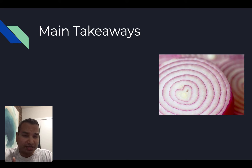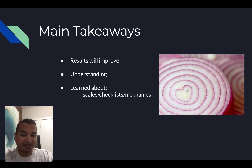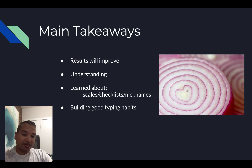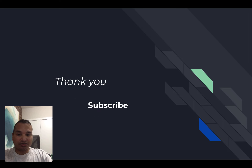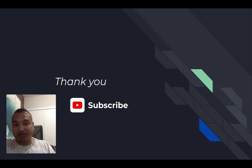The main takeaways for this video: your typing results will improve if you dig into the ambivert and omnivert coin. It helps you see the system for what it really is at its core. We learned about the scales, the checklists, nicknames, and building good typing habits — looking at main categories rather than subcategories that have been there the whole time. This is the essence of the Ni that is OPS, and now you're one layer deeper into the system. Thank you — if this video was valuable, please subscribe to my channel, and if you're already subscribed, much love.